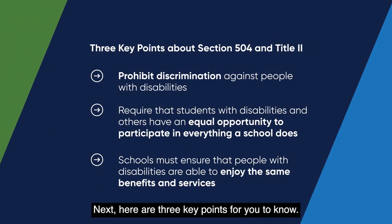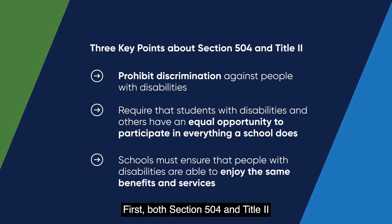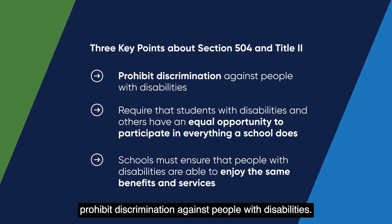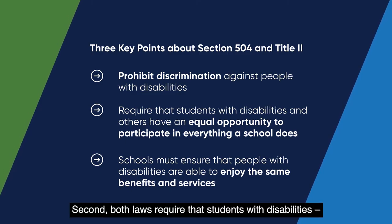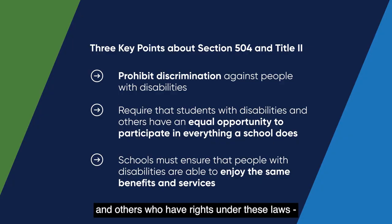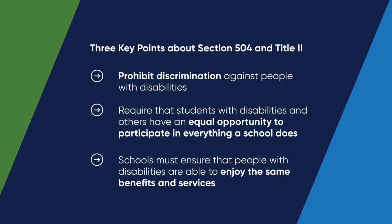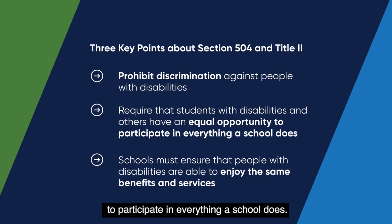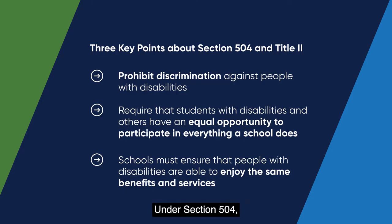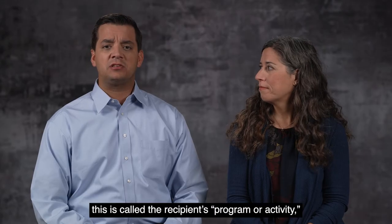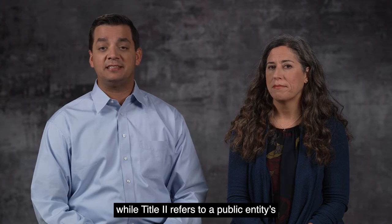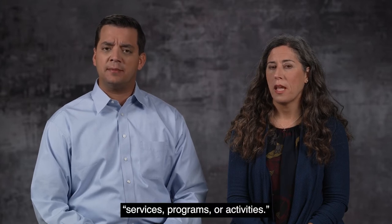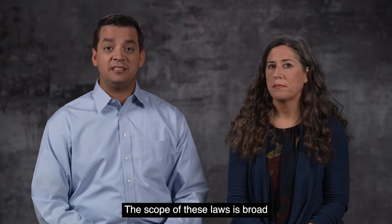Next, here are three key points for you to know. First, both Section 504 and Title II prohibit discrimination against people with disabilities. Second, both laws require that students with disabilities and others who have rights under these laws have an equal opportunity to participate in everything a school does. Under Section 504 this is called the recipient's program or activity, while Title II refers to a public entity's services, programs, or activities. The scope of these laws is broad in prohibiting disability-based discrimination.